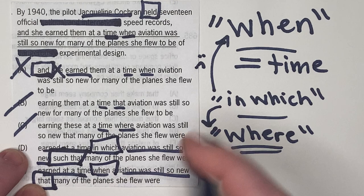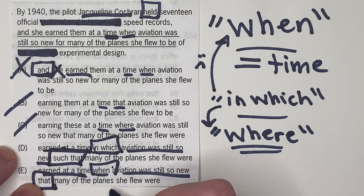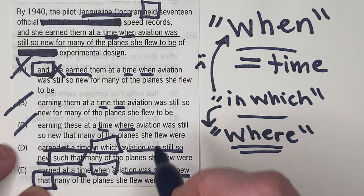So D says earned at a time in which aviation was still so new, such that many of the planes she flew were of experimental design, versus earned at a time when aviation was still so new that many of the planes she flew were of experimental design.